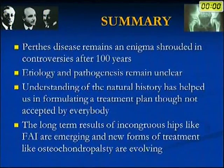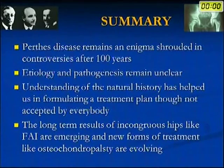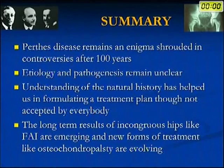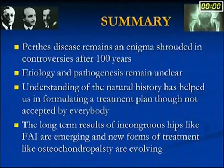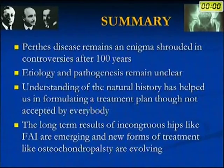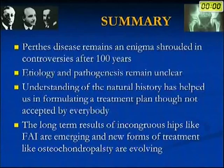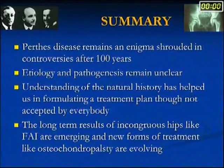In summary, Perthes disease remains an enigma shrouded in controversies after 100 years. Etiology and pathogenesis remain unclear. Understanding of natural history has helped formulate a treatment plan, though not universally accepted. The long-term results of incongruous hip, including femoroacetabular impingement, are emerging, and new forms of treatment like osteochondroplasty are evolving.